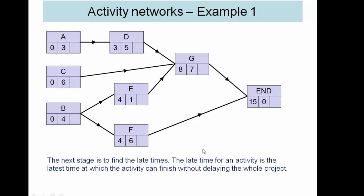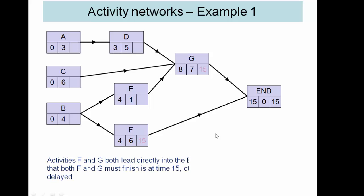To complete the network though, we now look at the latest time that each activity can start without delaying the whole project. This is always the case that the end event has the same early and late time. And as both F and G go directly to the end activity they can't finish any later than 15.